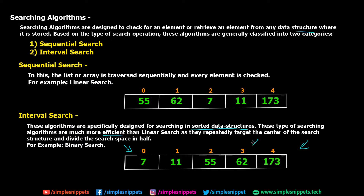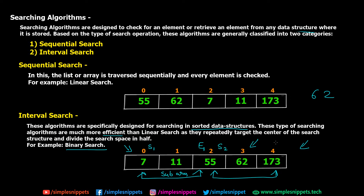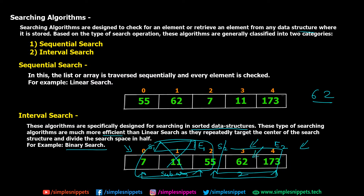Let's say you want to search for 62. An example of interval search is binary search, which divides the array in half every time and searches in that half. In the first step we get two subarrays. Since the array is arranged in ascending order, we check the start and end positions. We know 62 is greater than 55, so 62 is not present in the first subarray. We directly search in the second subarray, and the process continues until we reach our element. We'll discuss binary search in detail in upcoming videos.